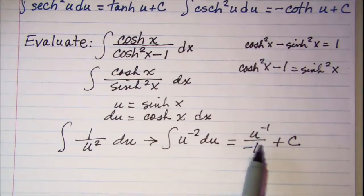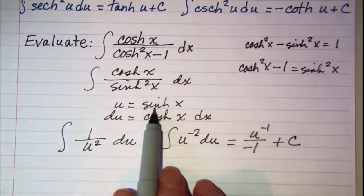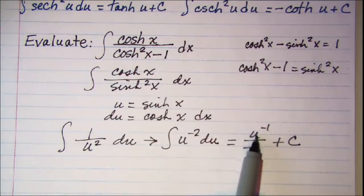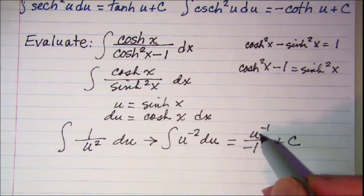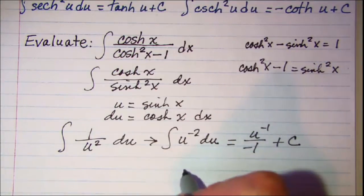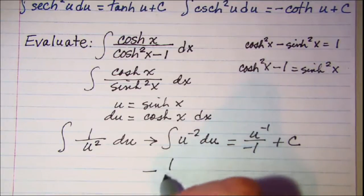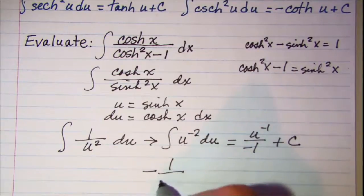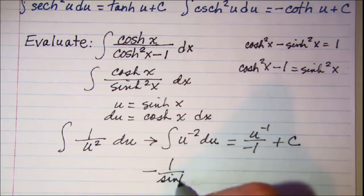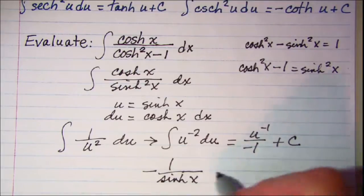Now I can sub back in. My u is the hyperbolic sine of x and this is 1 over so I have a negative 1 over the hyperbolic sine of x plus a constant.